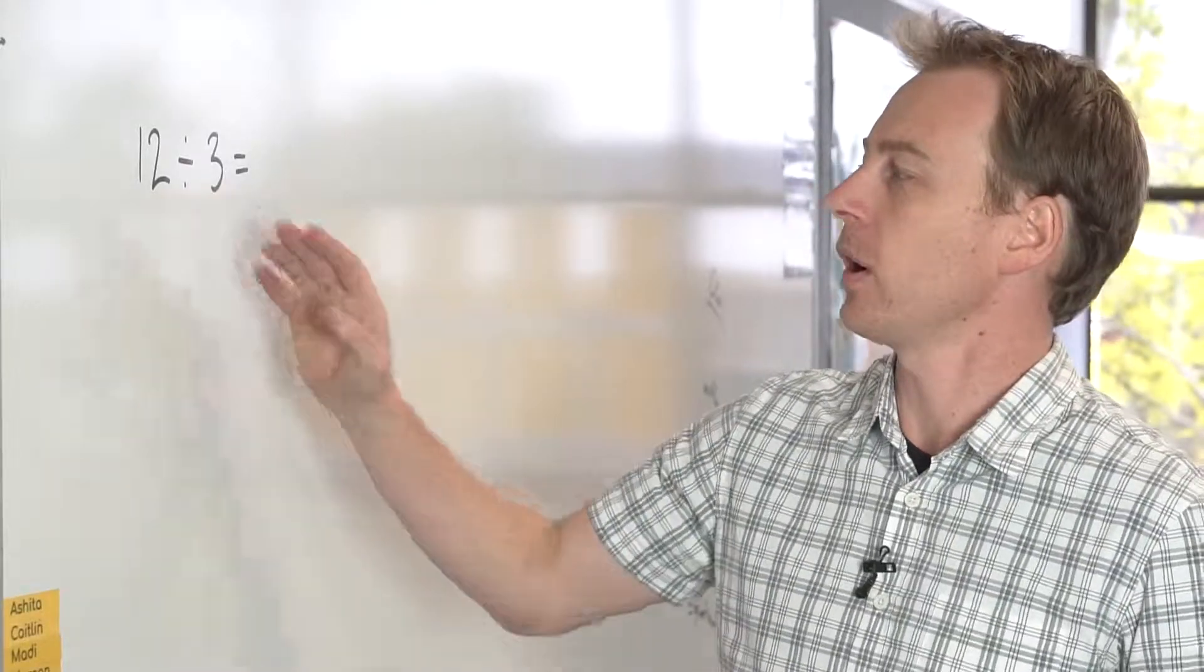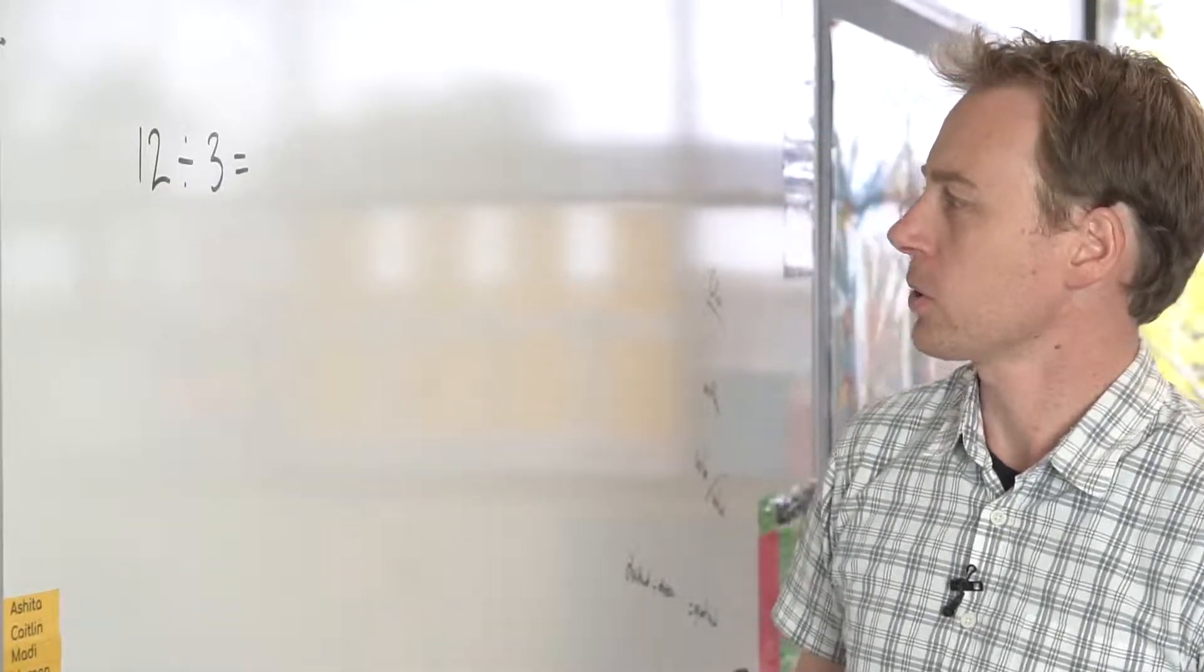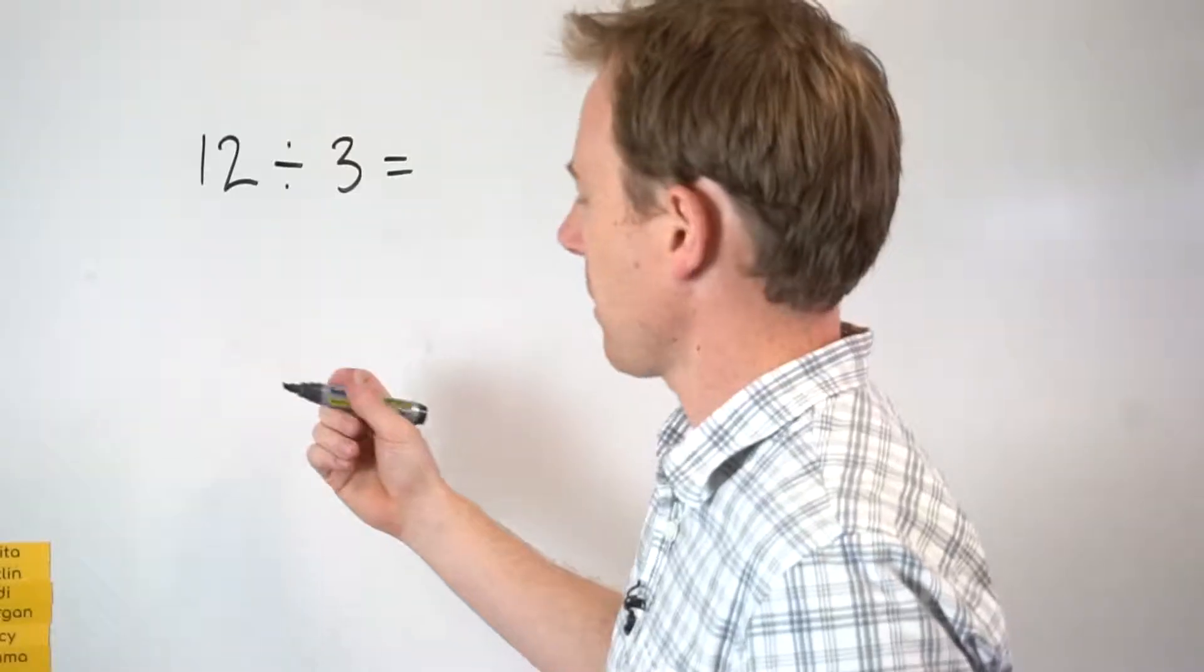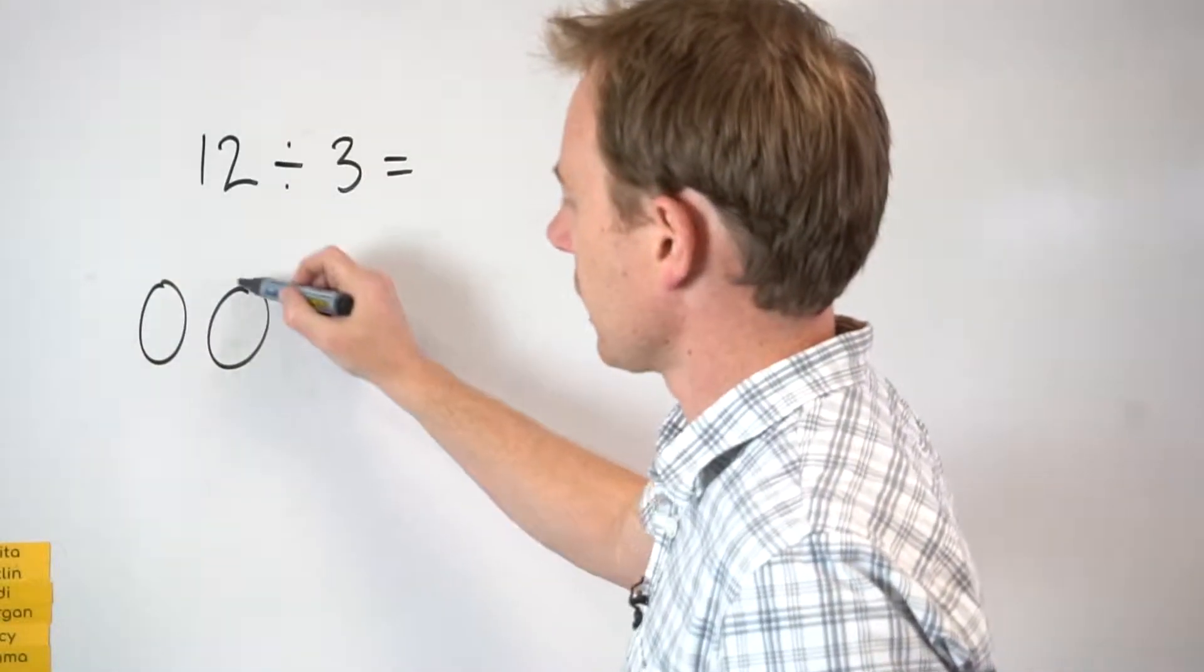So I've got 12 divided by three. So what I need to make sure of is that I'm dividing by three, so that's how many groups I'm actually breaking it into.